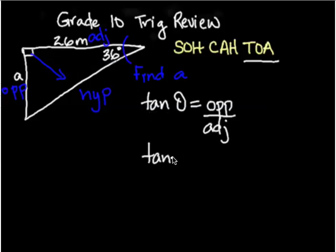So we have tan 36 degrees equals the opposite side, which is A, over the adjacent side, which is 26. Now I'm going to solve for A.